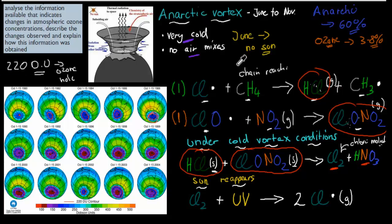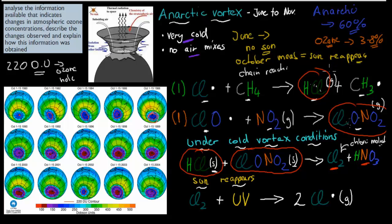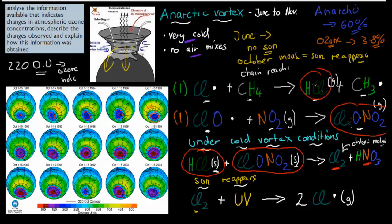Then October comes along. October means the sun reappears. So a couple months after June, in October, the sun reappears and UV radiation reappears. Now we have lots of these chlorine molecules trapped in the vortex area — the air hasn't mixed with the surrounding area. The UV radiation will break the chlorine molecule into two chlorine radicals. Once this happens, as soon as October hits, you're going to see an ozone hole appearing. So many chlorine radicals all in a small area means the biggest hole will be in the Antarctic region.